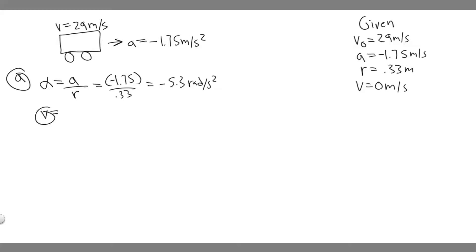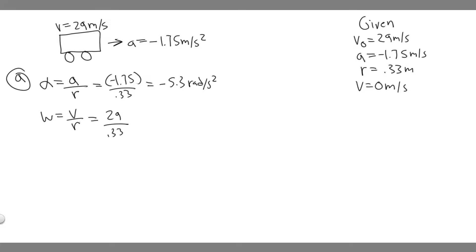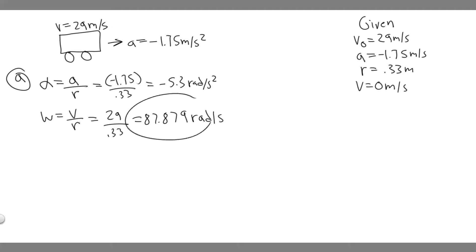Now we want omega. You need to know velocity equals r times omega, meaning if we divide the velocity by the radius, it gives us the angular velocity. So omega equals v over r. The initial velocity is 29 meters per second divided by 0.33, which gives us 87.879 radians per second. The final omega is just 0 radians per second since it's not moving.